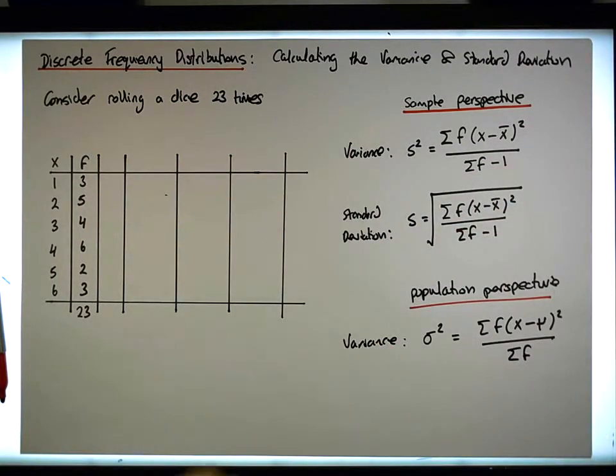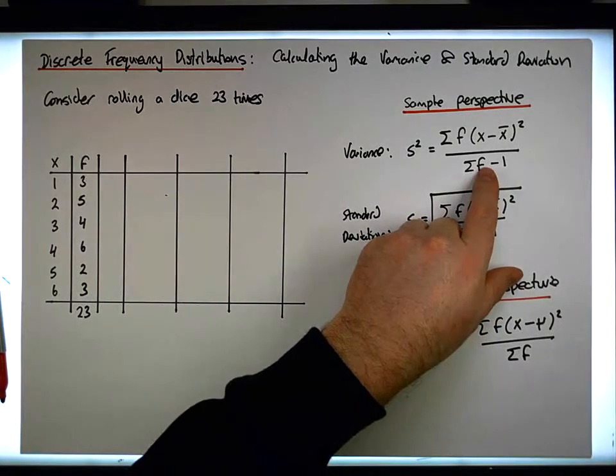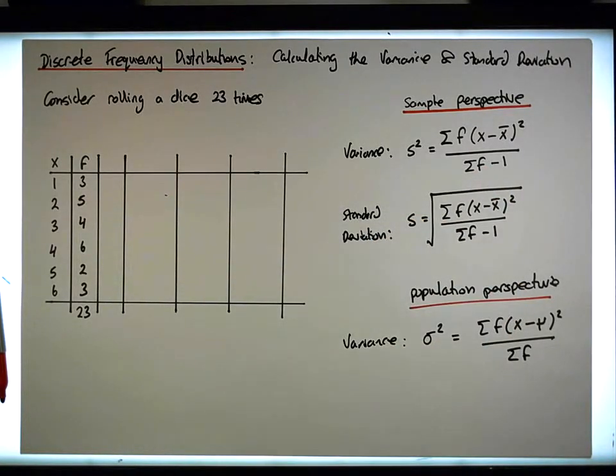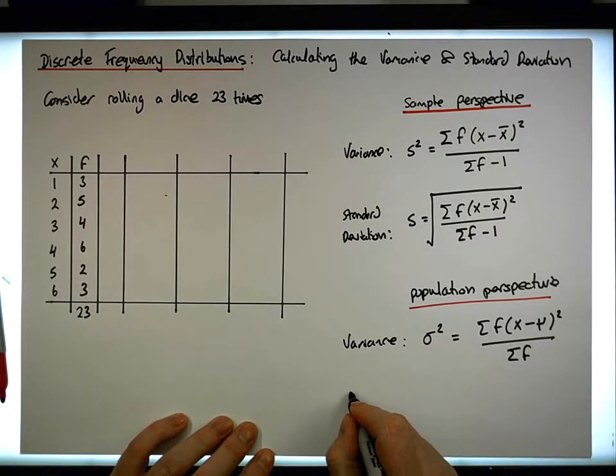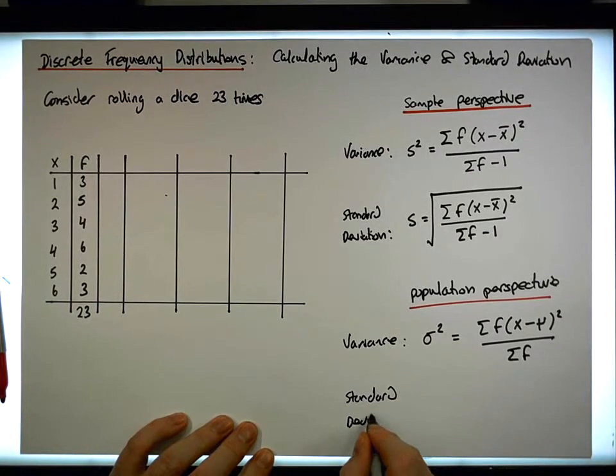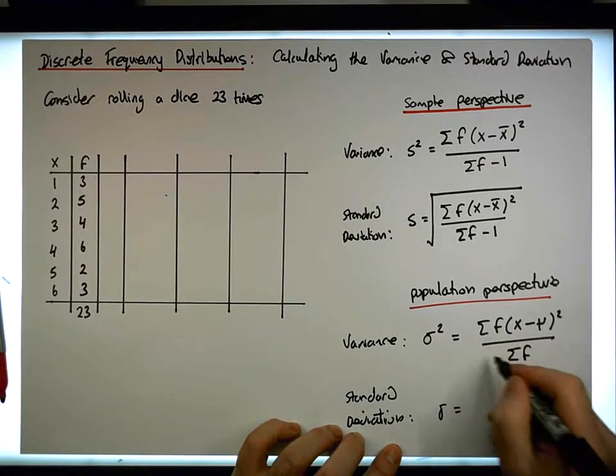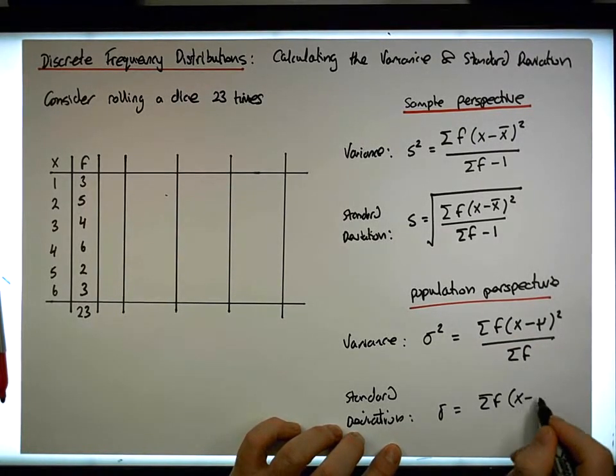There's a complicated explanation in relation to why the sample variance, we reduce the denominator by one, and in the population case, we don't. But we won't go into that. That's well beyond the scope of what we're doing. So now we have the standard deviation in the population case, defined by sigma, which is simply equal to the square root of this. So it's the sum of the f's times the x minus mu squared divided by the sum of f.